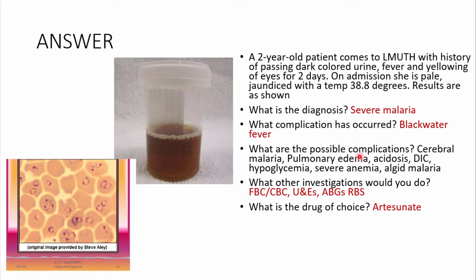Possible complications include cerebral malaria — defined as generalized tonic-clonic seizures two or more in 24 hours attributed to no other cause but malaria, or an alteration in the level of consciousness attributed to no other cause. You could also have pulmonary edema, acidosis, disseminated intravascular coagulation (please do not write abbreviations on your answer), hypoglycemia, severe anemia, and algid malaria — that is malaria with shock.